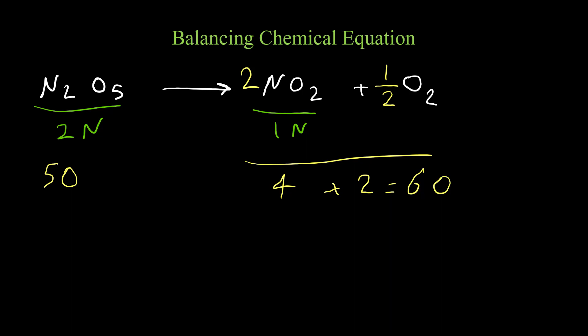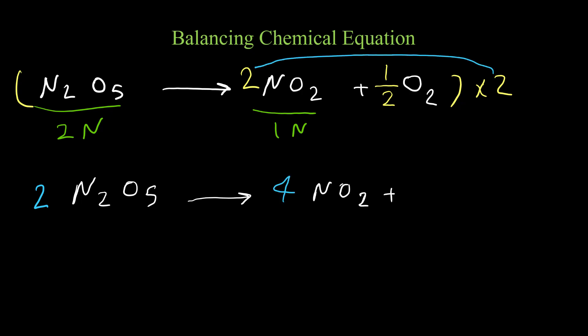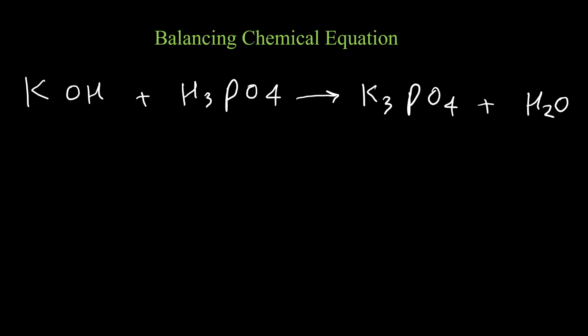With the coefficient of one-half for O₂ we now have five oxygen on both sides. But since we have a fractional coefficient, I need to multiply the whole equation by two and rewrite it. That gives two N₂O₅ → four NO₂ + one O₂. Two times one-half equals one, so this is our balanced equation.